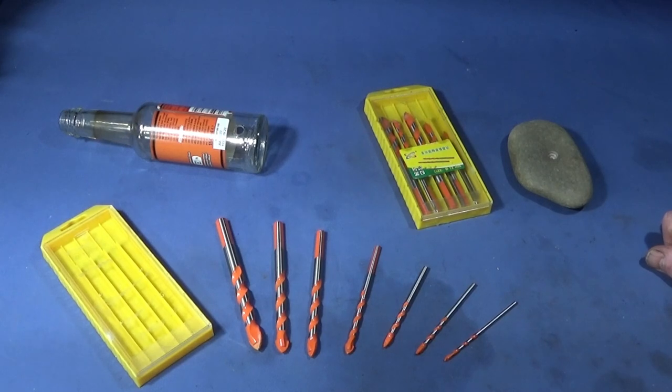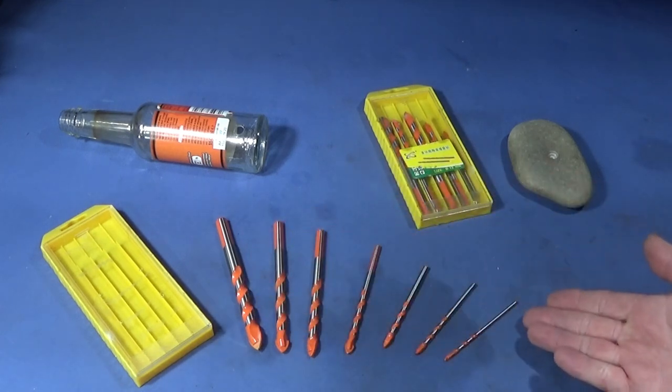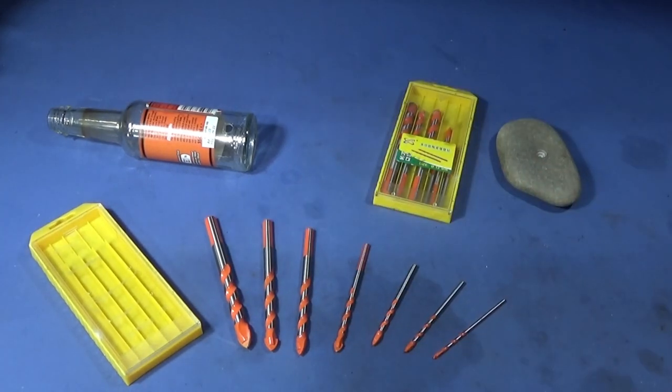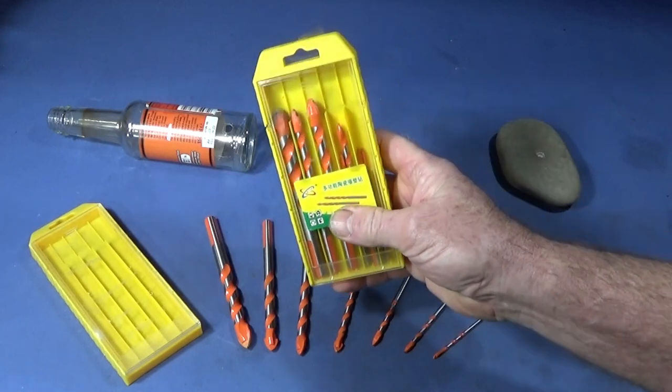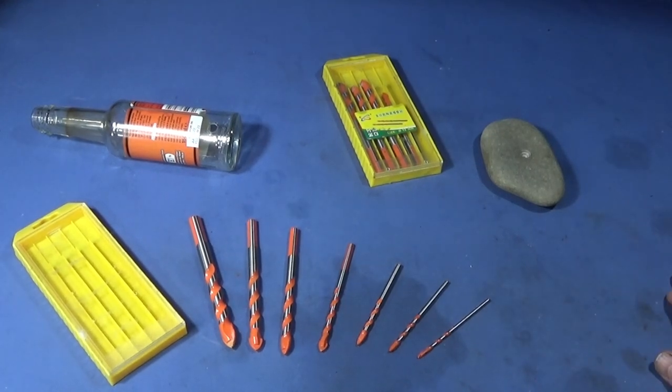Just a very quick video today to show you some new drills that I've got from Banggood. I wanted some to drill glass, stone, ceramics, and brick and things like that. So I've got this set here, a seven-piece set that comes in this nice plastic box. The sizes in the set are 3, 4, 5, 6, 8, 10, and 12 millimeter drill bits. Now I'll just show you a couple of screenshots of the Banggood page that they're on.